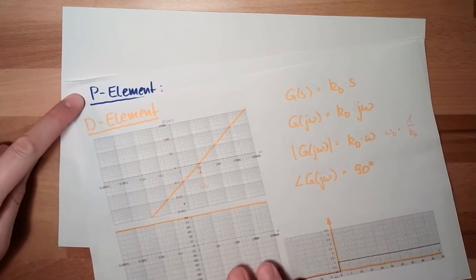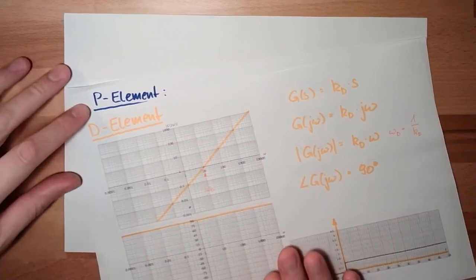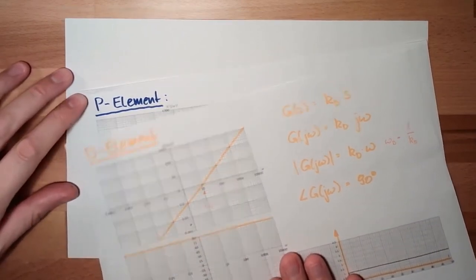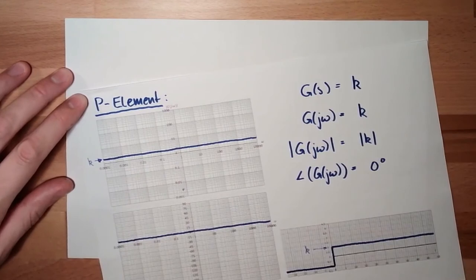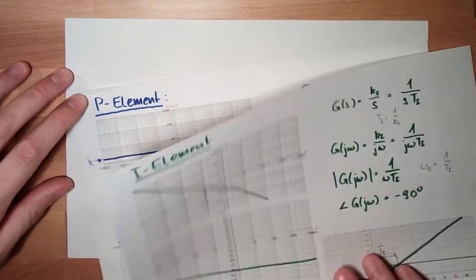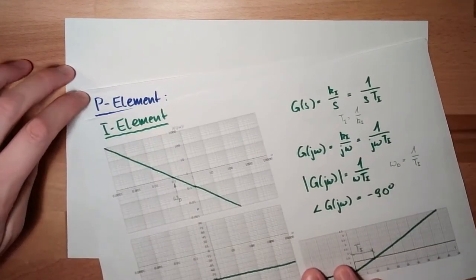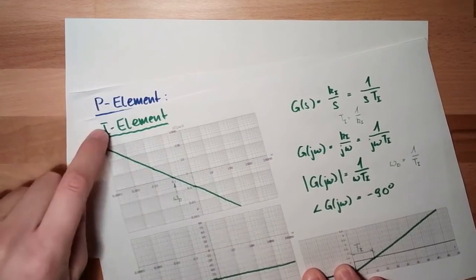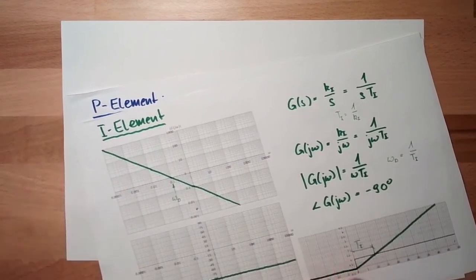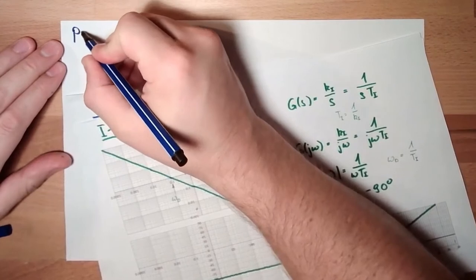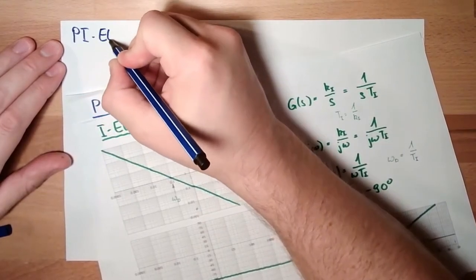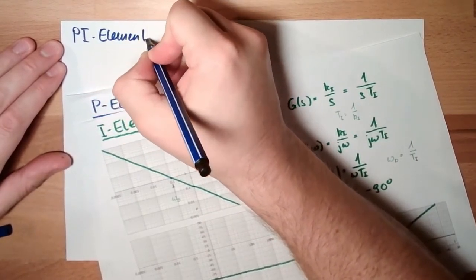We are talking about something else now. We are talking about a combination of a p and an i element. So we are talking about a pi element. This is the topic of this video: the pi element.